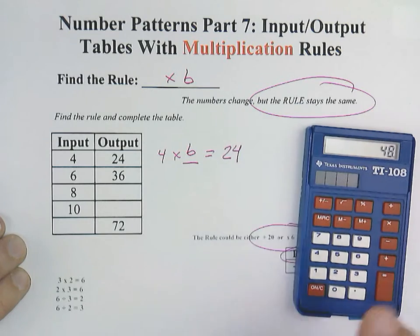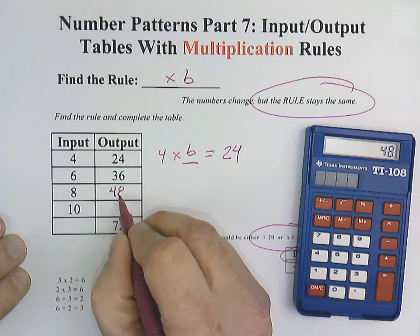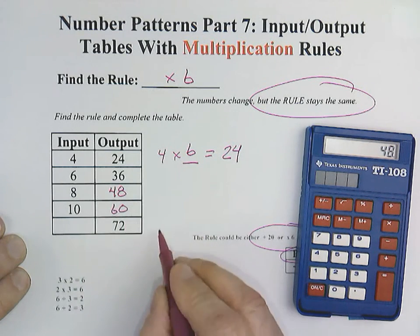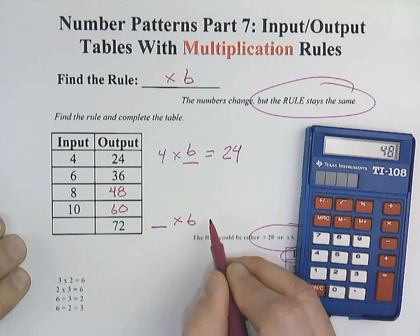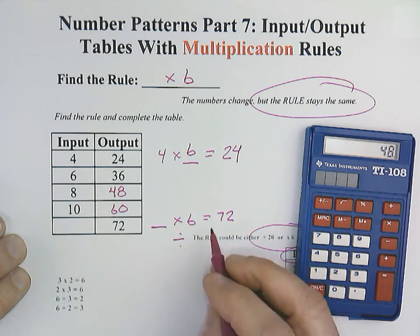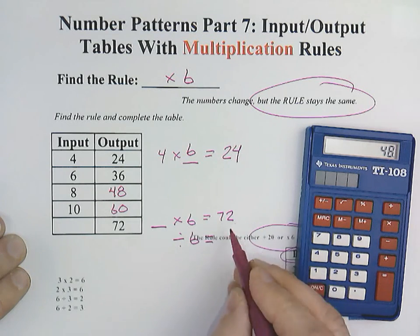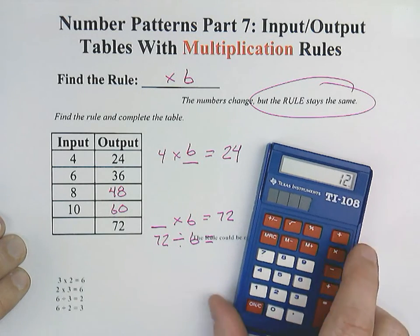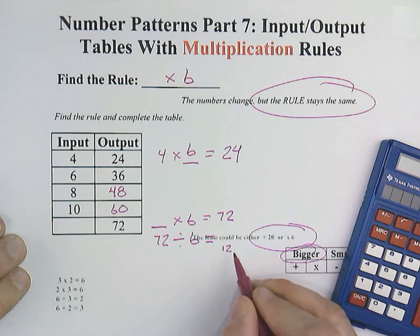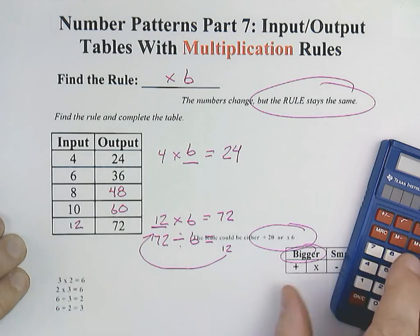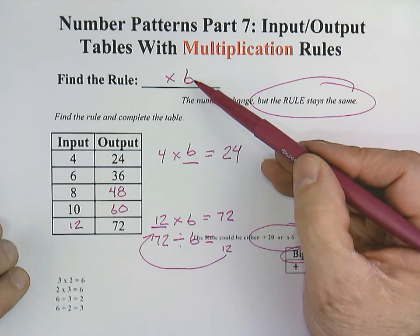8 times 6 equals 48. We know that 10 times 6 would be 60. Here we have blank times 6 equals 72. But because we are working on this one the opposite direction, instead of multiplying by 6, we can divide by 6. In other words, 72 divided by 6 would equal 12, which I'll write right here, meaning that it would also be 12 here. And so we have now completed our input-output table with a rule of times 6.